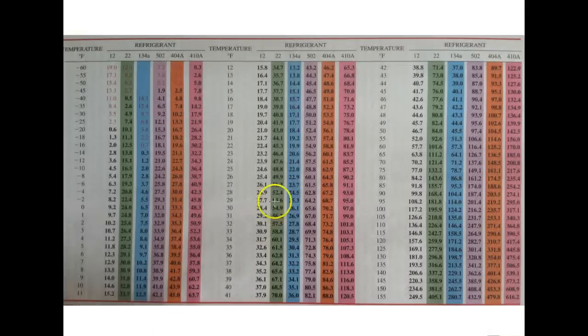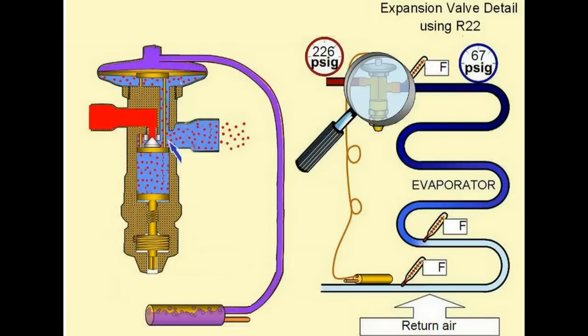So 40 degrees, let's find it on our chart here, is 67, 68.5 PSIG. So at 67 PSIG, both in the sensing bulb and the evaporator line, we have 67 PSIG as the closing force, 67 PSIG as the opening force. And we have no superheat whatsoever at this point.